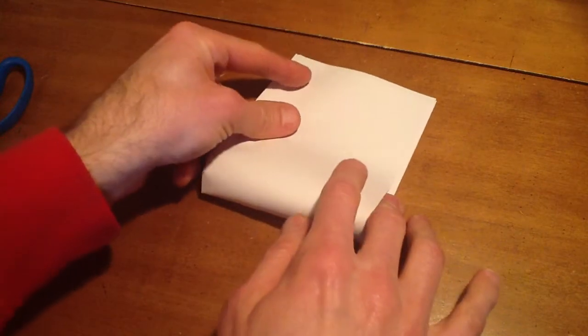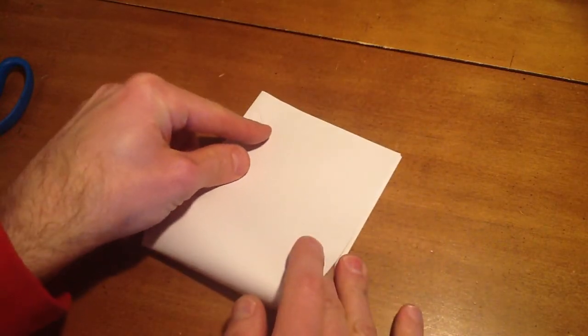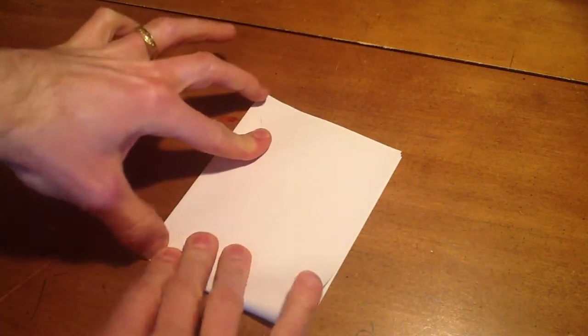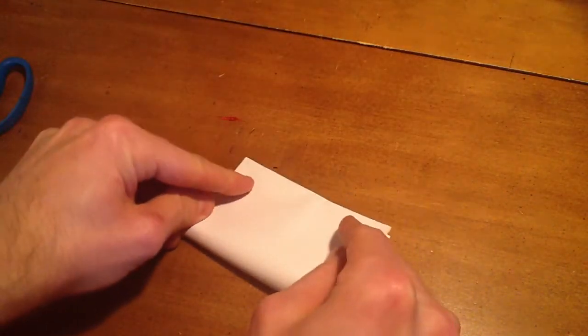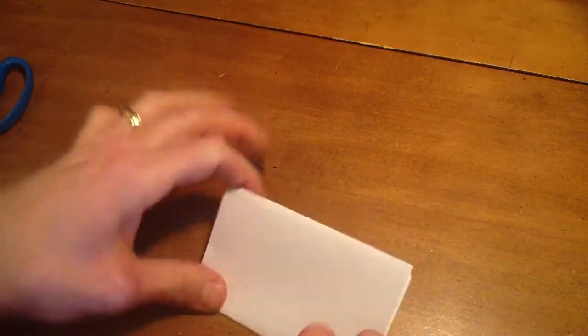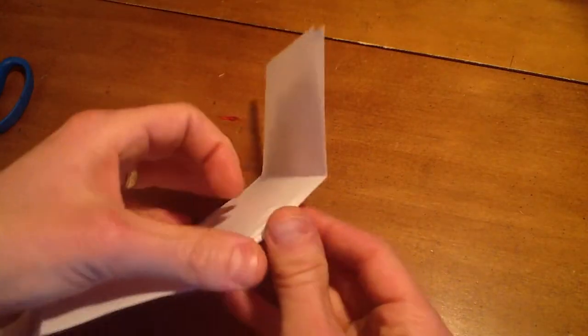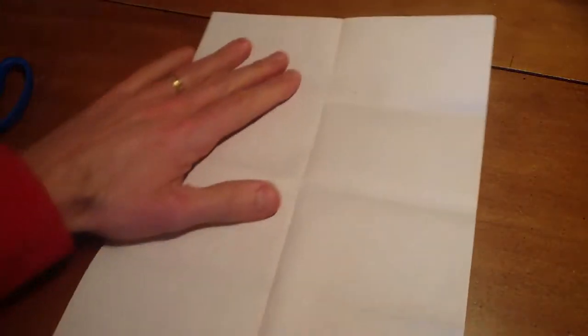Then what you're going to do is start from the bottom, fold that up to the top, so you're folding that in half, and again fold from the bottom up to the top to fold that in half. What that does is it divides your piece of paper up into eight writing areas.